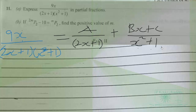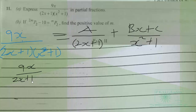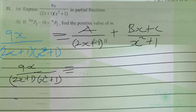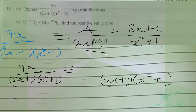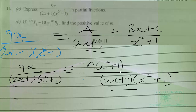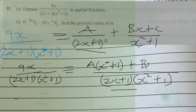So we now collect the LCM. The LCM is (2x + 1)(x² + 1). So this divides to give us x² + 1 for the A term, giving A(x² + 1). And x² + 1 divides the LCM to give us 2x + 1, so we have (Bx + C)(2x + 1).